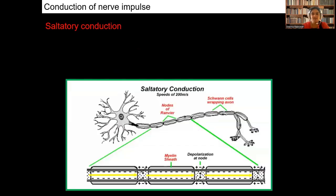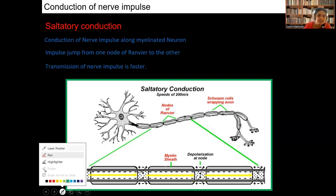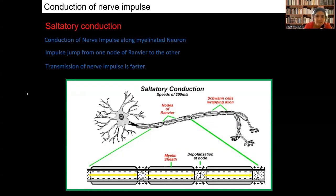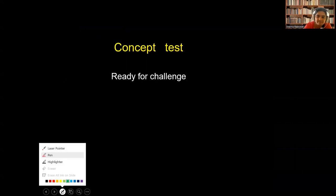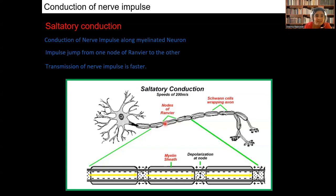What is meant by saltatory conduction? It is the conduction of the nerve impulse along a myelinated neuron where the impulse jumps from one node of Ranvier to another. The nodes of Ranvier are the gaps on the axon, which we have already discussed. When the impulse is jumped from one node of Ranvier to the other, we call it saltatory conduction. Here the transmission of the nerve impulse is faster.